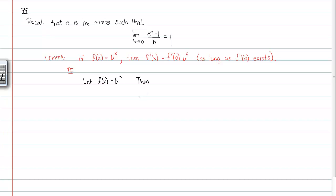Let f of x equal b to the x. Then f prime at x must equal the limit as h is going to zero of, and now we'll use the derivative definition, f of x plus h minus f of x all over h. It's the limit as h approaches zero of that. I will pause video while I write the next step.